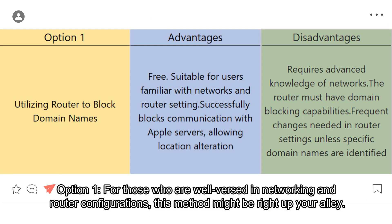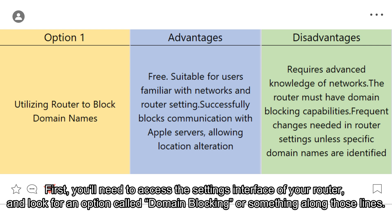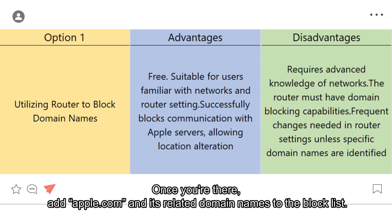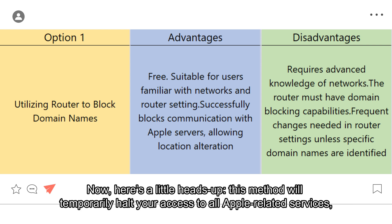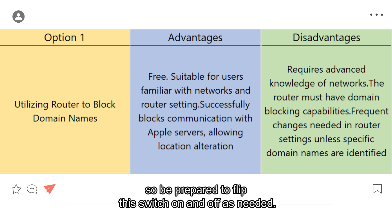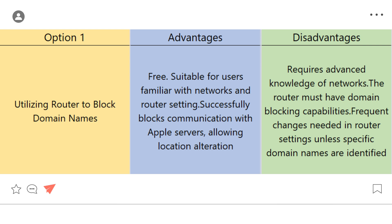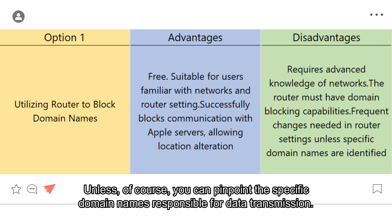Option 1: for those who are well-versed in networking and router configurations, this method might be right up your alley. First, you'll need to access the settings interface of your router and look for an option called domain blocking or something along those lines. Once you're there, add apple.com and its related domain names to the block list. This method will temporarily halt your access to all Apple-related services, so be prepared to flip this switch on and off as needed, unless you can pinpoint the specific domain names responsible for data transmission.